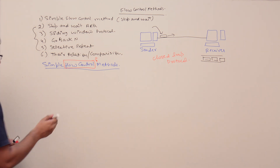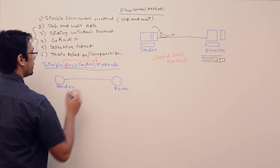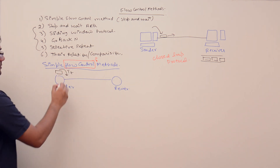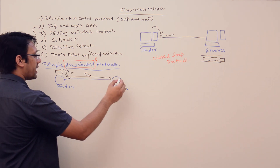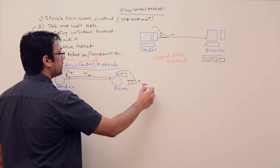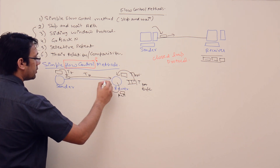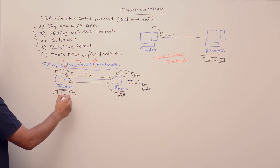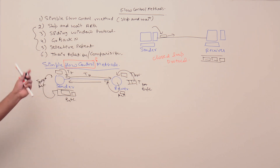In the simple flow control method, the sender transmits a packet onto the transmission media, it travels to the receiver (propagation time), sits in the receiver's buffer, and is then processed. After processing, the receiver generates an acknowledgement, places it on the media, and sends it back to the sender. The acknowledgement may also sit in the sender's buffer before being processed. This complete cycle is the simple flow control method.